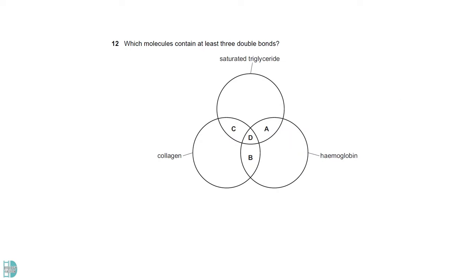Triglycerides always contain at least three double bonds, as the carboxyl group of fatty acids has a carbon-oxygen double bond. Collagen and hemoglobin are both proteins. The monomers, amino acids, have carbon-oxygen double bonds in their carboxyl group.